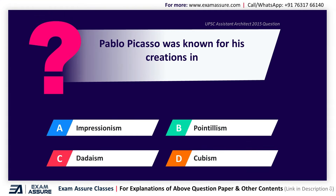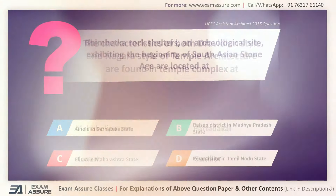Next question. Pablo Picasso was known for his creations in — Option A: Impressionism, Option B: Pointillism, Option C: Dadaism, Option D: Cubism. The correct answer is Option D, Cubism.